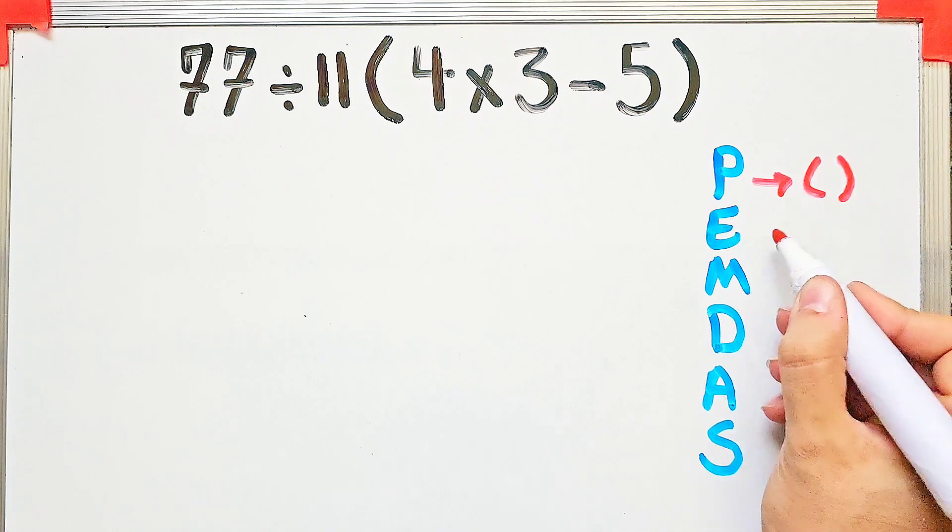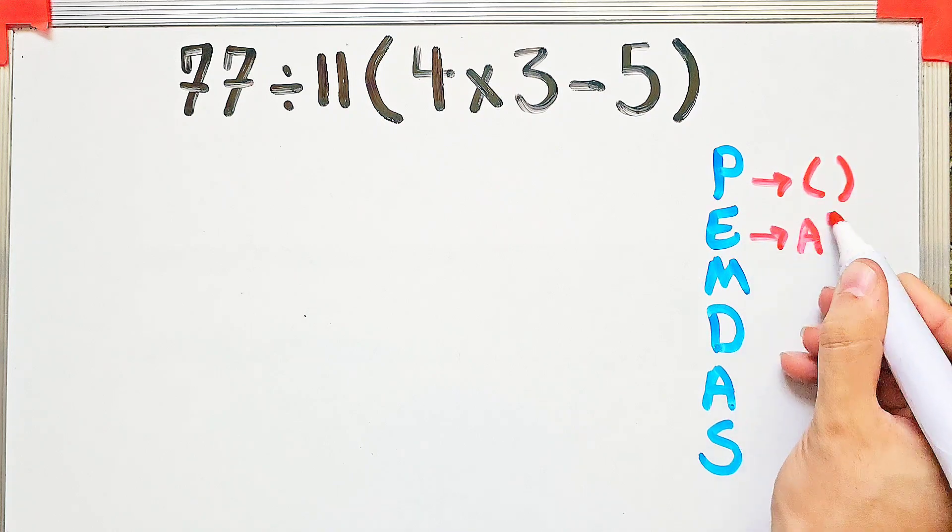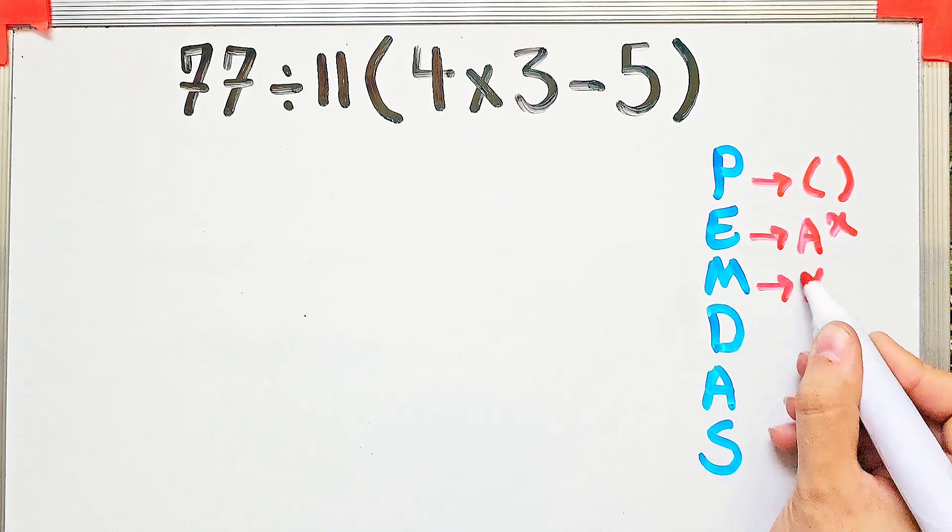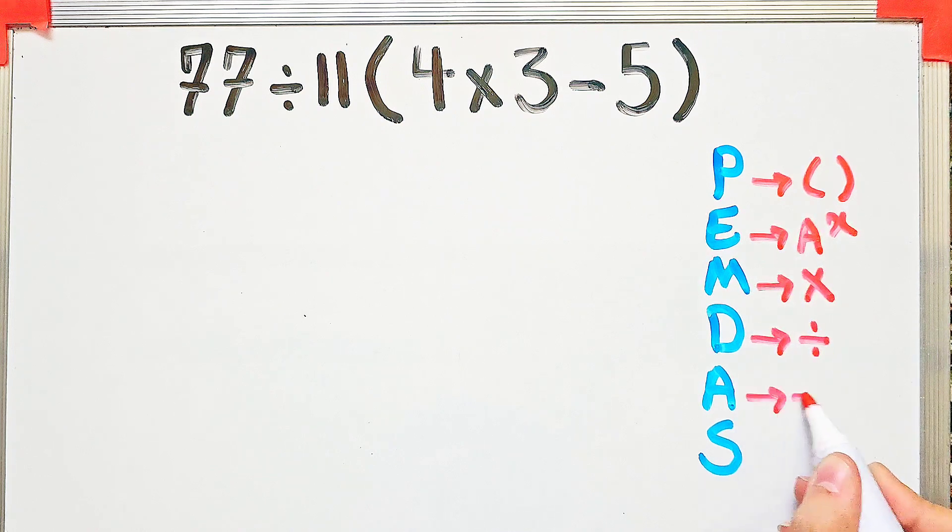In this rule, P stands for parentheses, E stands for exponent, M stands for multiplication, D stands for division, A stands for addition, and S stands for subtraction.